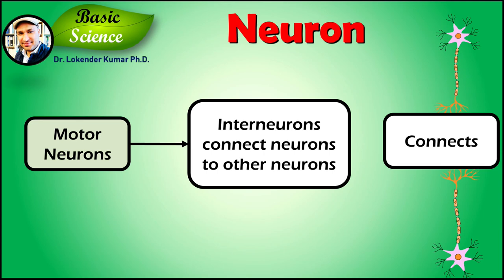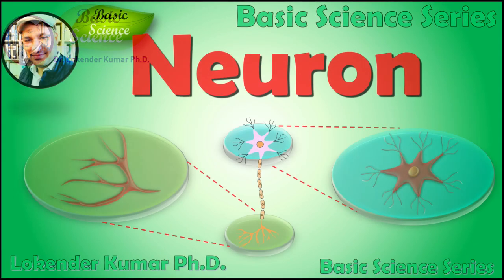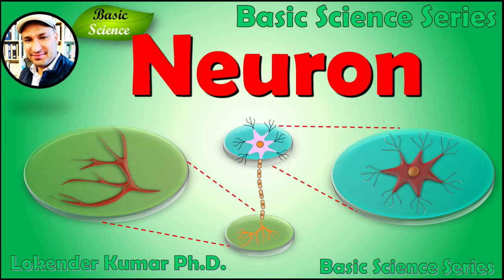Interneurons connect neurons to other neurons within the same region of the brain or spinal cord. A group of connected neurons is called a neural circuit. With this note, I conclude this presentation and I hope the video was helpful for you to understand the basics of nerve cell. If you liked the video, please hit the like button and I'll see you in the next video where I'll bring new topics related to the nervous system.